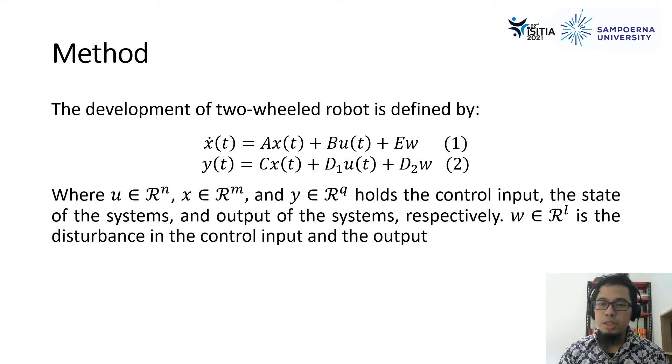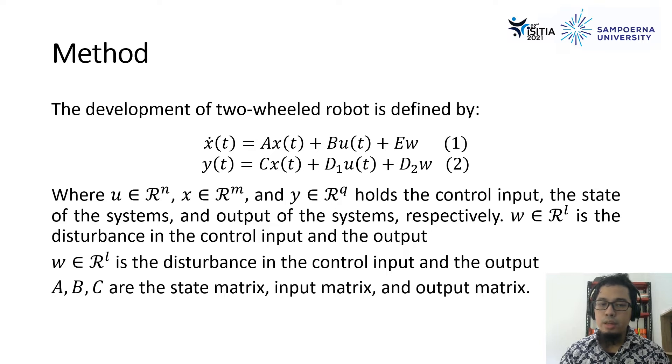For the notation of W, in R^L is the disturbance in the control input and the output. Here, for the A, B, and C are the state matrix, input matrix and output matrix.